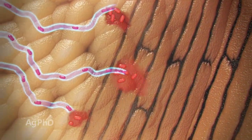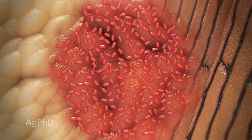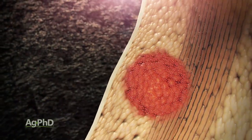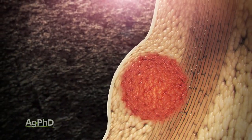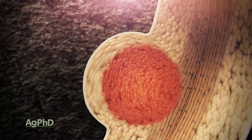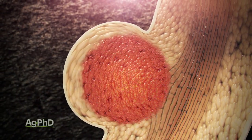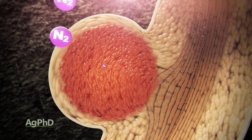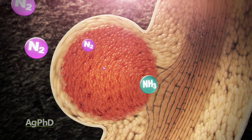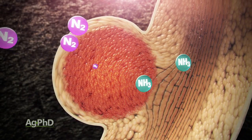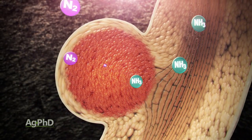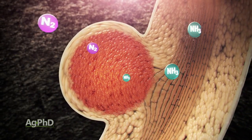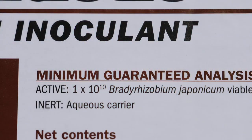A very specific example: inoculant for soybeans. That's live bacteria that colonizes on soybean roots, takes atmospheric nitrogen, and converts it into a form the plant can use. That's been around for decades.